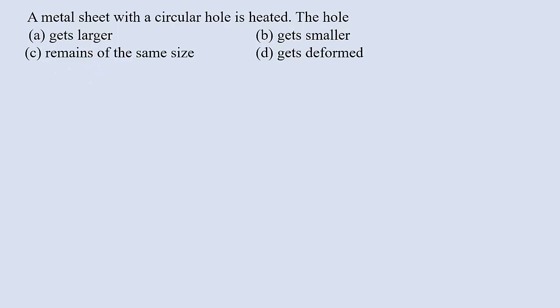MCQ 1: A metal sheet with a circular hole is heated. We know that when heat is supplied, expansion of the object takes place. So the area of the circular hole increases. The expansion of the metal sheet is independent of the shape and size of the hole. Therefore option A is correct — the hole gets larger.